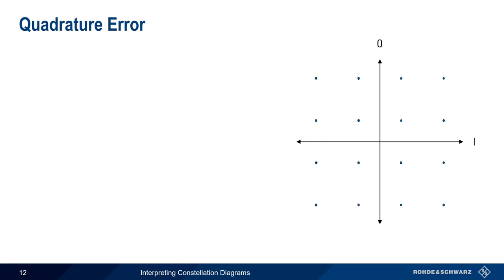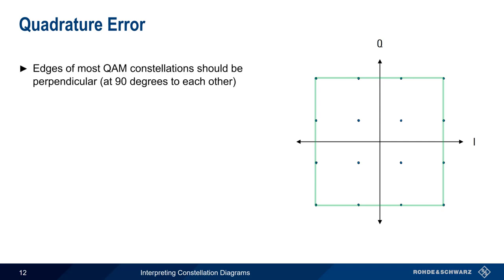As we just mentioned, most QAM constellations are arranged in a square shape, with the horizontal and vertical edges ideally being perpendicular, that is, at right angles to each other.